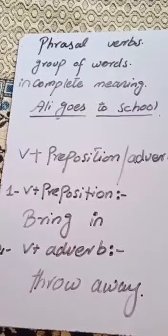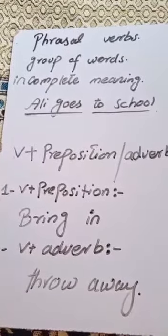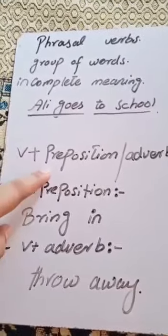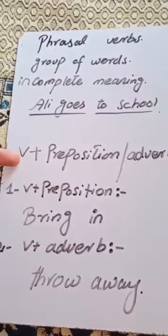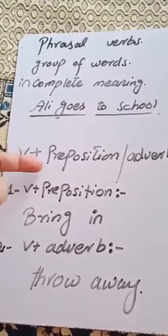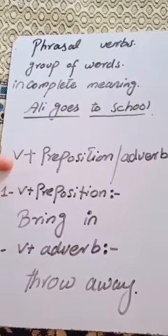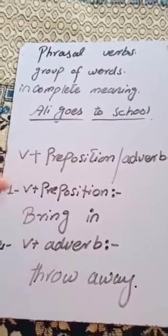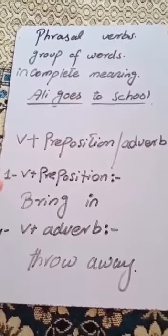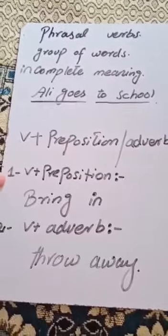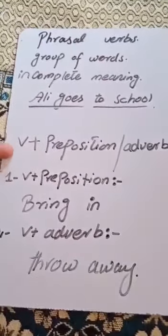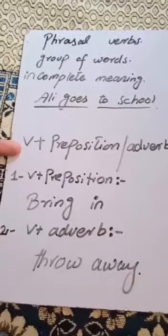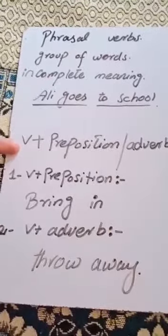A phrasal verb is basically a combination of two things: a verb plus a preposition, or a verb plus an adverb. You must keep in mind that without a verb you cannot find any phrasal verb — the verb is the basic and most important part of a phrasal verb.